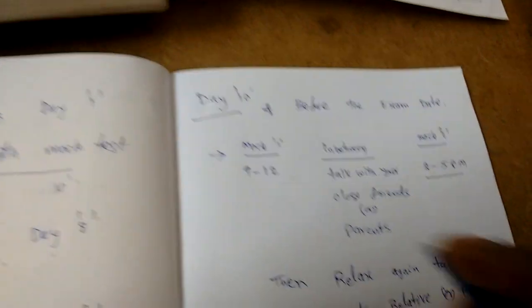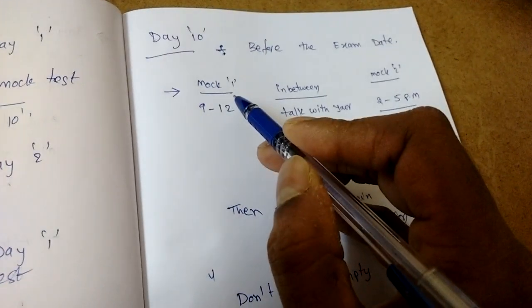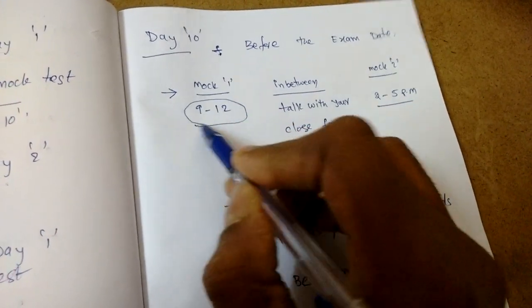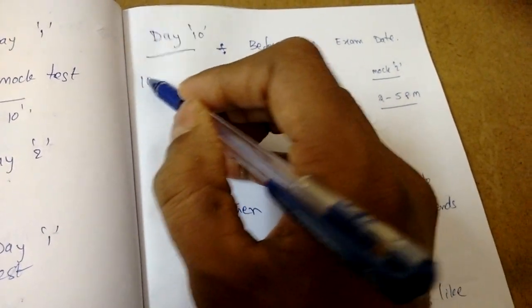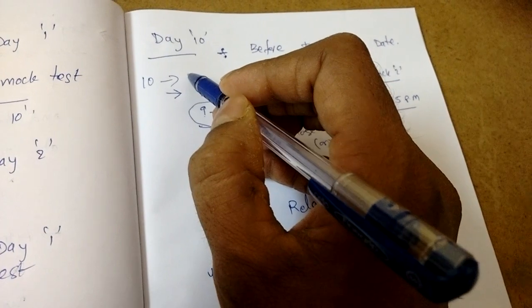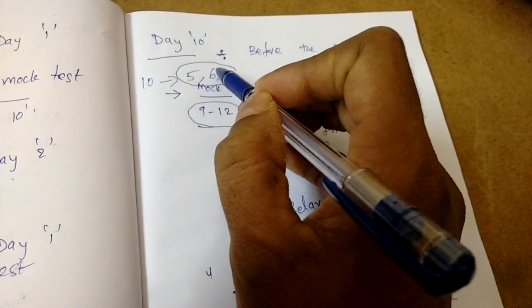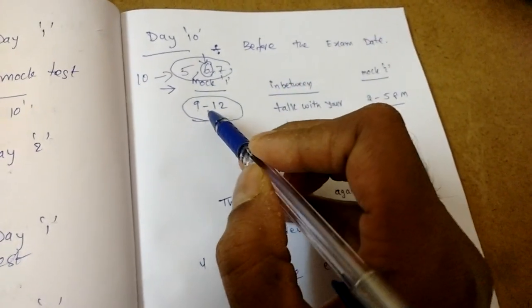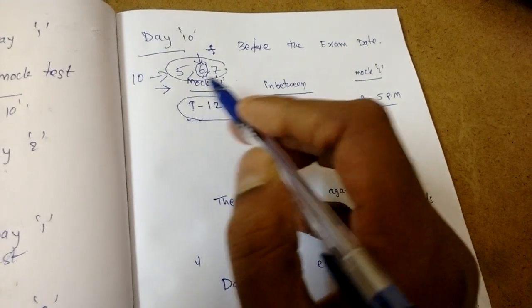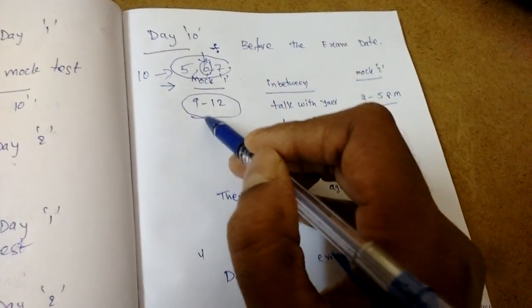Day 10, before the exam date - we have done so many terms of revision, no need of revision. Take mock test one from 9 to 12, 9 AM to 12 AM. You may sleep at 10, you may get up at 5 or 6 or 7, doesn't matter. 6 is the best I think, 6 AM. Before 6 to 9, just see on the walls your basic formulas, etc. Then mock test one at 9 to 12.